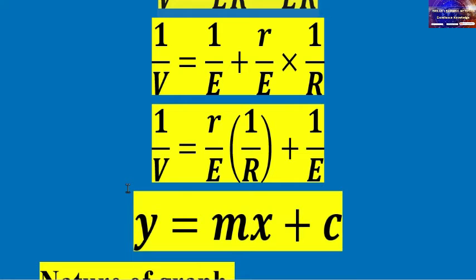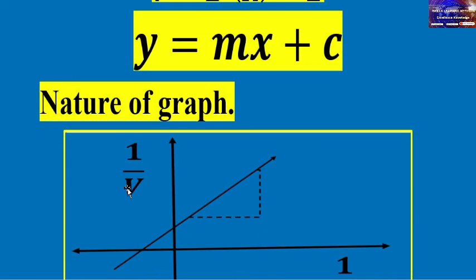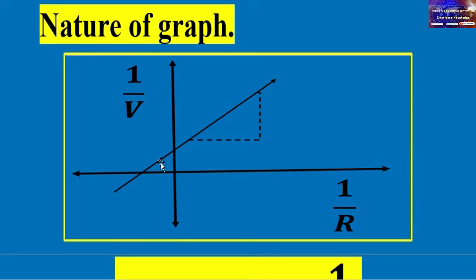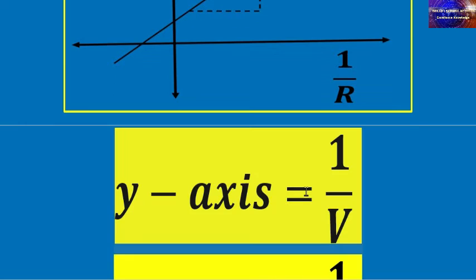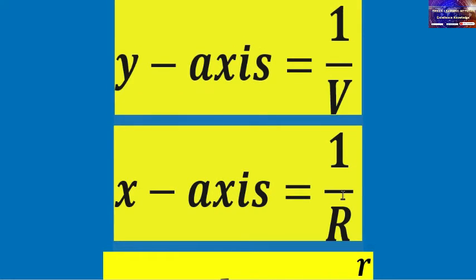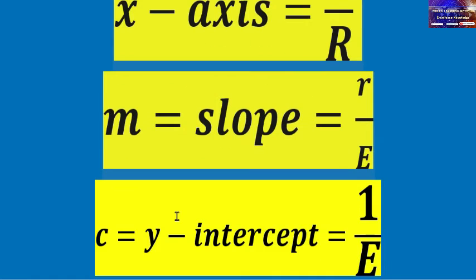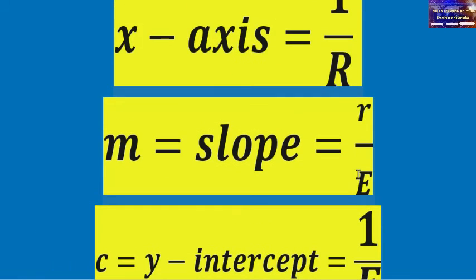That is the nature of the graph. Graphically, it is a straight line passing through the positive y-axis and the negative x-axis, with a positive slope. The y-axis is 1 over V, the x-axis is 1 over R, the slope equals r over EMF, and the y-intercept equals 1 over EMF.